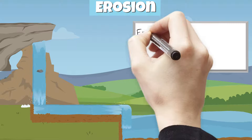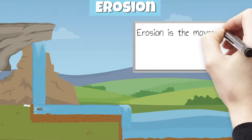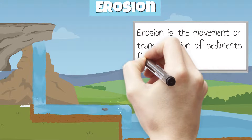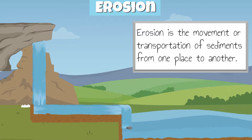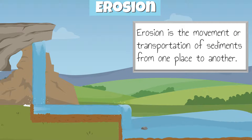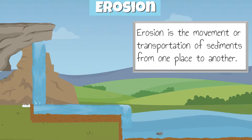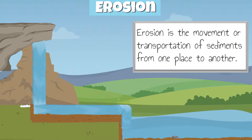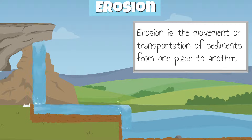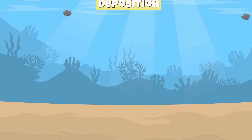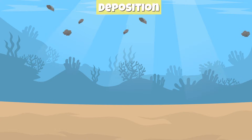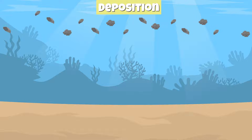Erosion is the movement or transportation of sediments from one place to another. Sediments can be transported to a new location by moving water, wind, and ice.